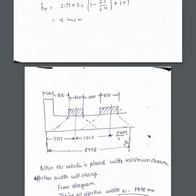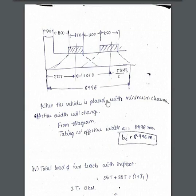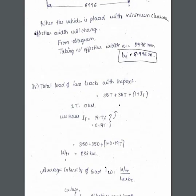When the vehicle is placed with the minimum clearance, effective width will change. From the diagram, taking the net effective width as 6996 mm, that is 6.996 meters.